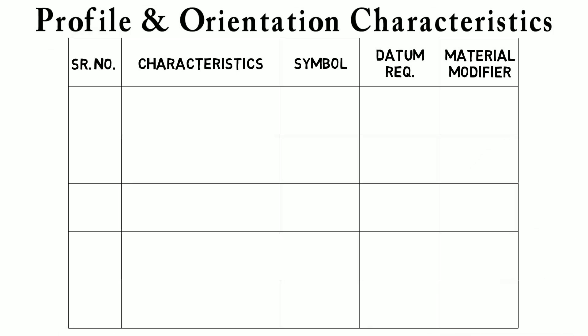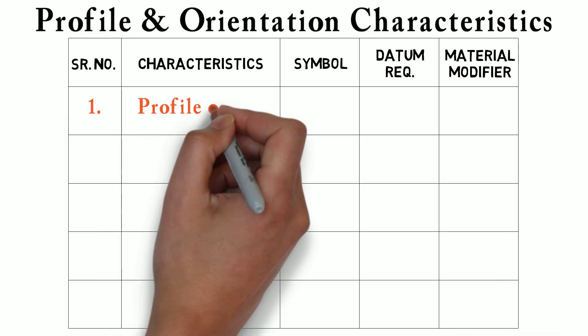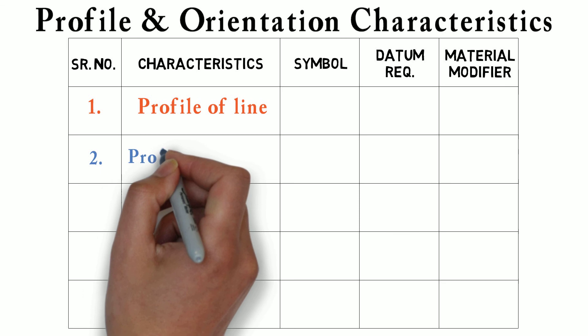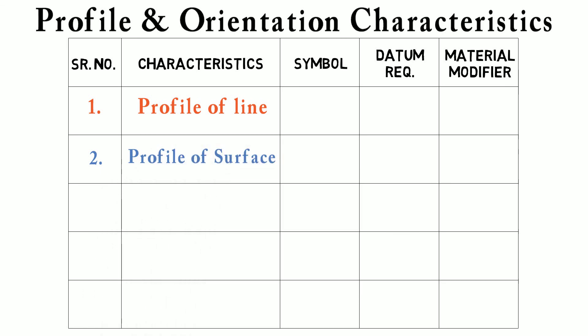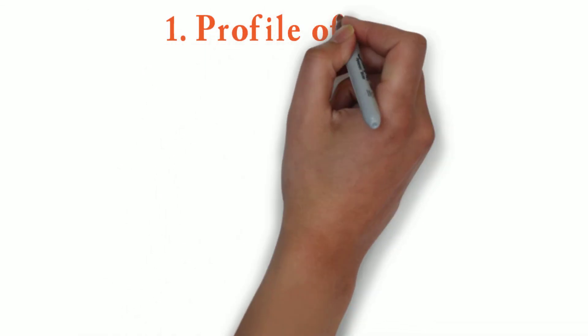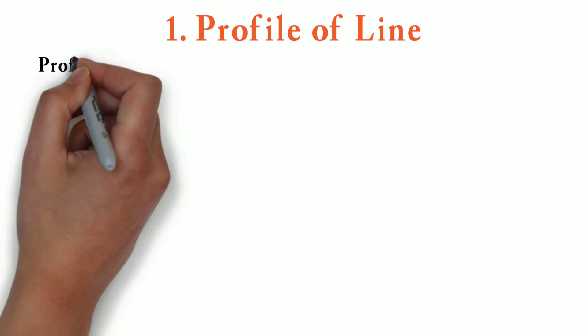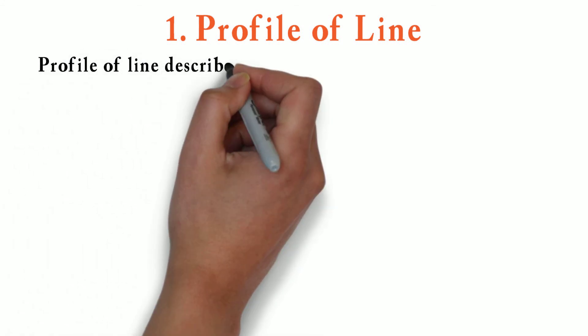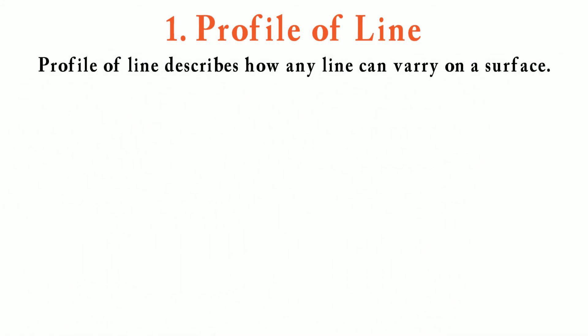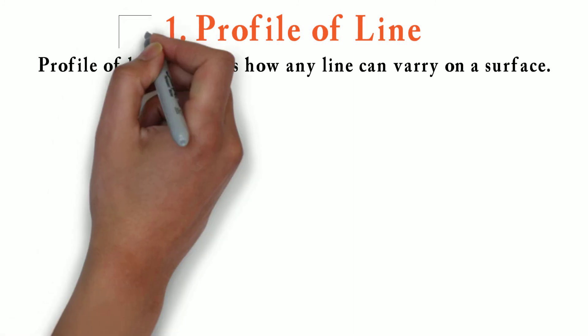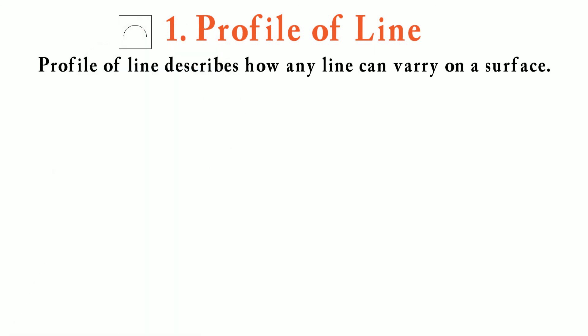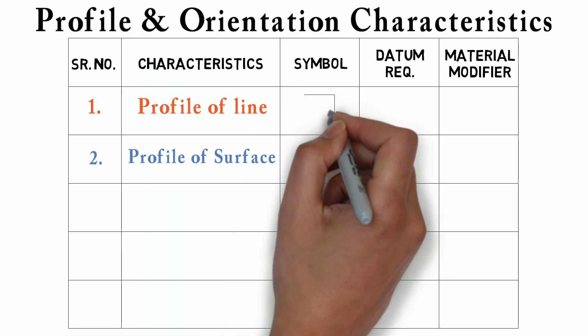In profile tolerance, we have two tolerances: profile of line and profile of surface. Let's start with our first tolerance, which is profile of line. Profile of line describes how any line can vary on a surface. It is usually used for curved lines. We show profile of line tolerance with a curve symbol like this.